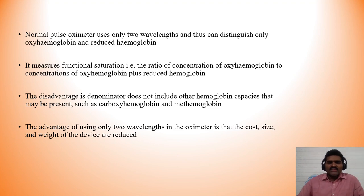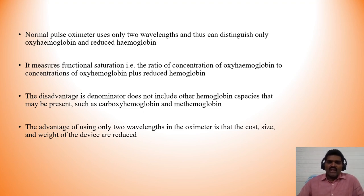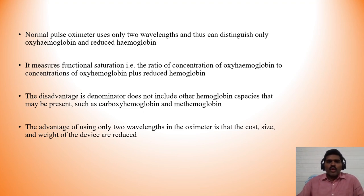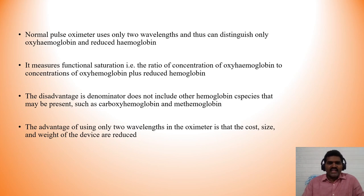The advantage of using only two wavelengths is that the cost, size, and weight of the device are reduced. Other instruments like co-oximeters use more wavelengths to differentiate between different hemoglobin species — that is the principle used for measuring methemoglobin and carboxyhemoglobin when those conditions are clinically suspected.